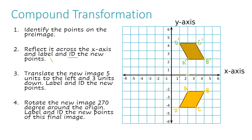The second part of step two asks us to identify the new points. Since we've already labeled them A prime, B prime, C prime, and D prime, I'm going to clarify what the ordered pairs are. A prime is at (2, 2). B prime is at (4, 2). C prime is at (3, 4). And D prime is at (1, 4).